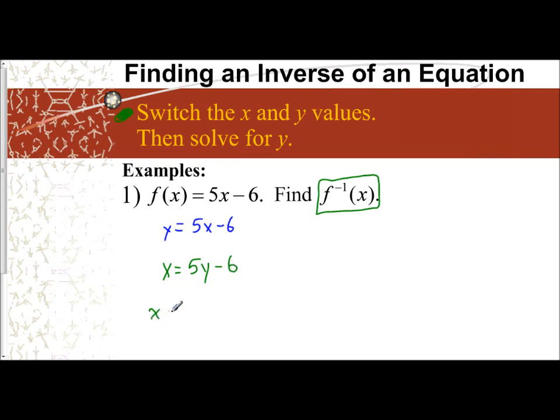So I would add 6 to both sides: x plus 6 equals 5y. And then I would divide everything by 5.